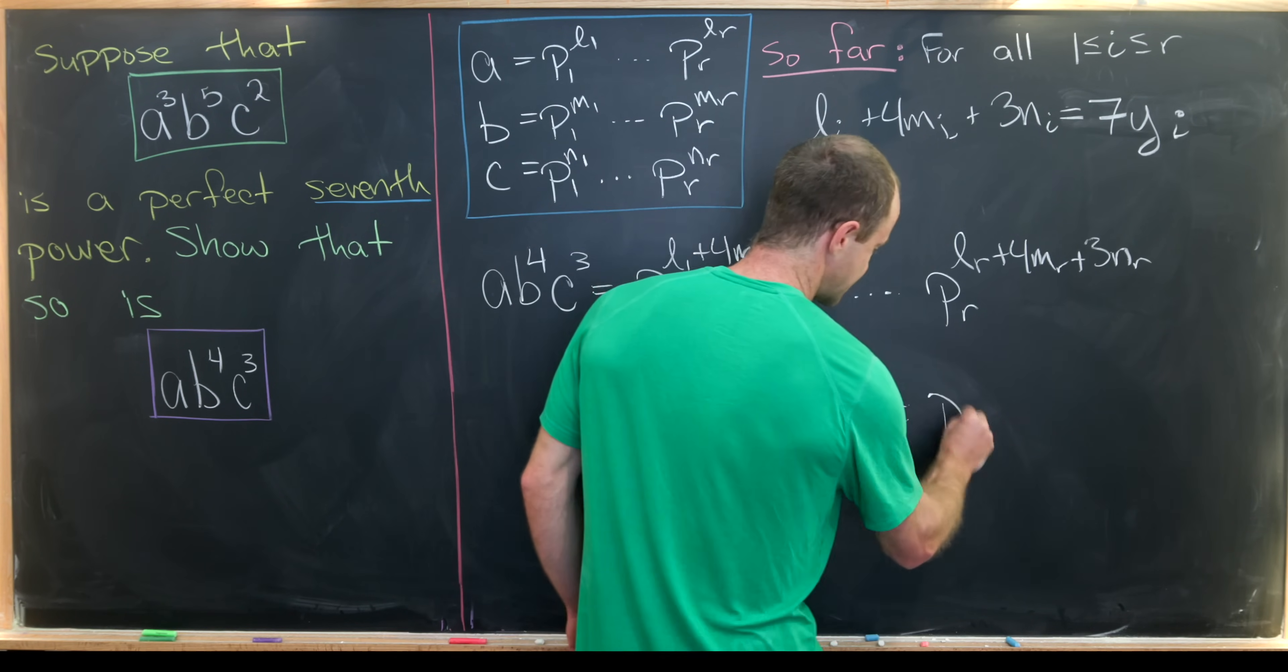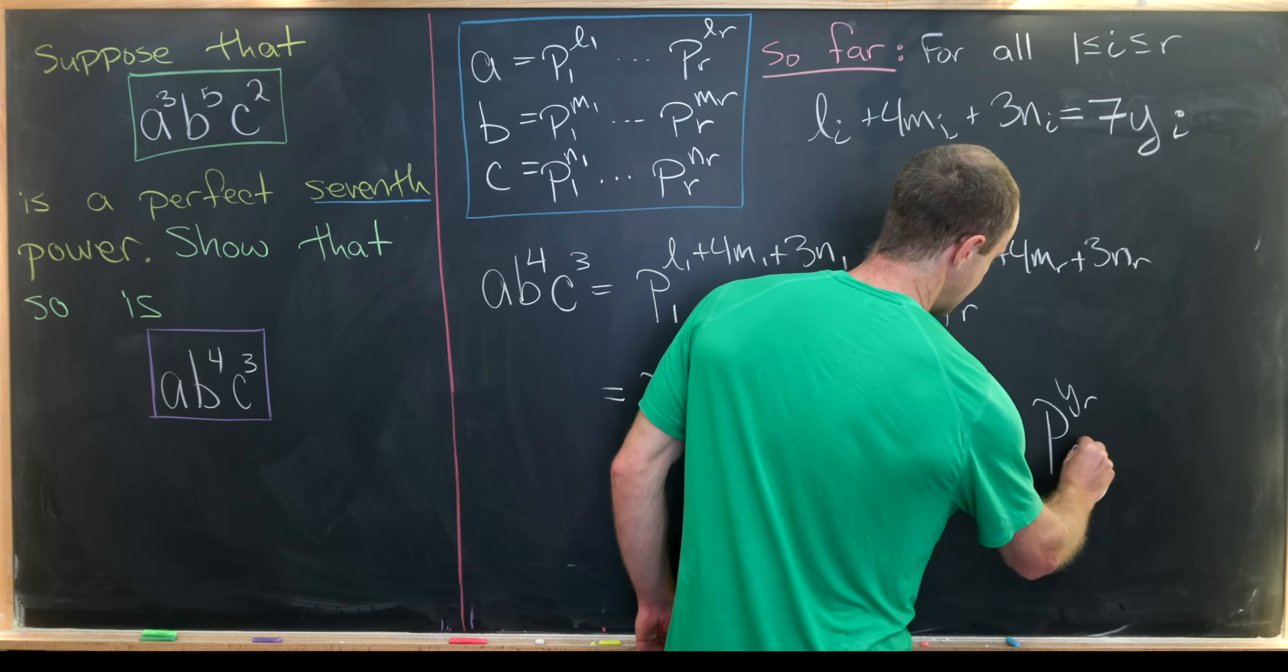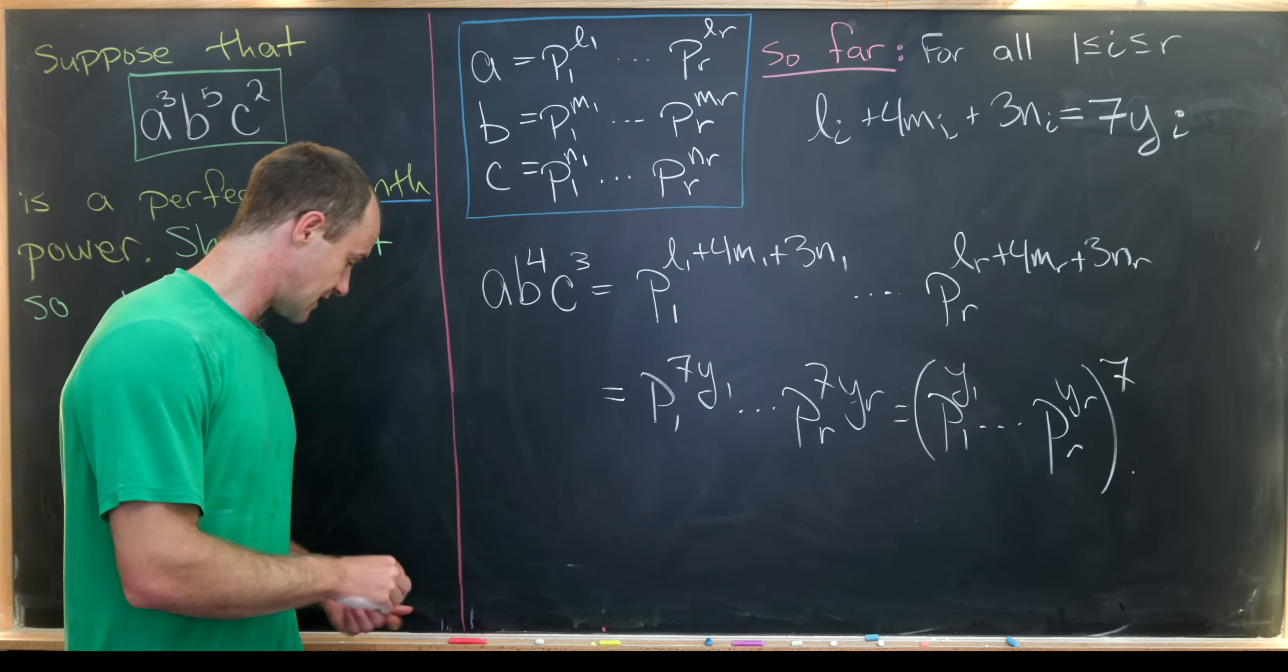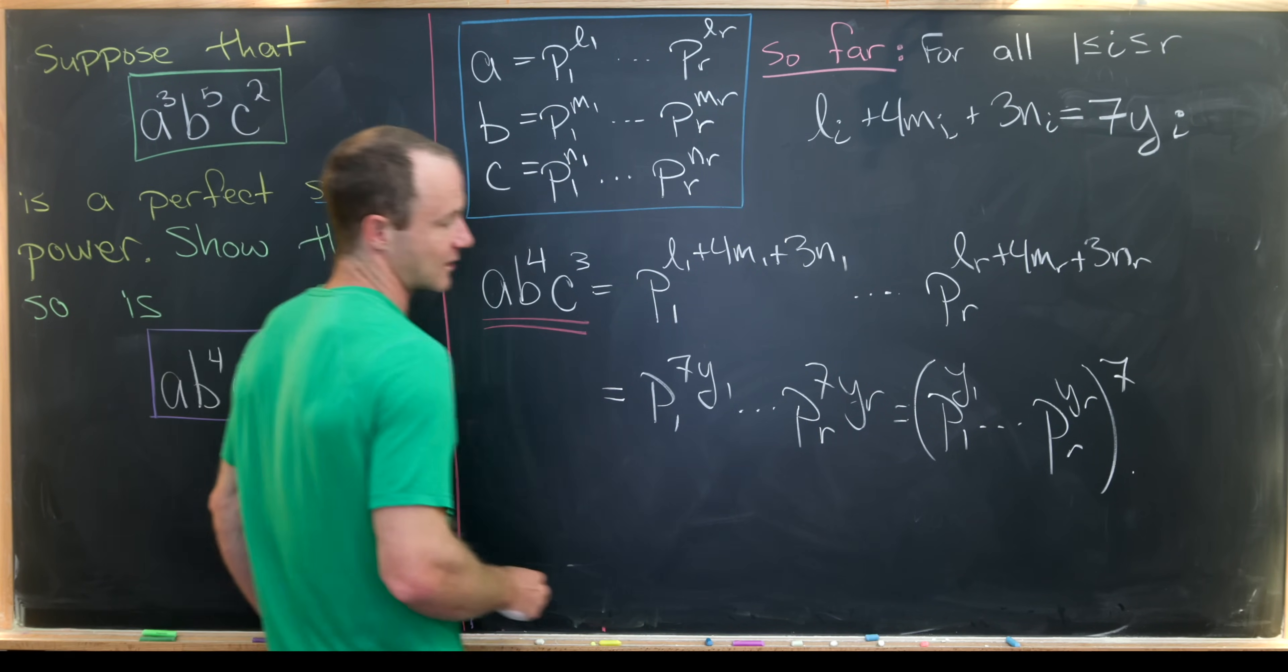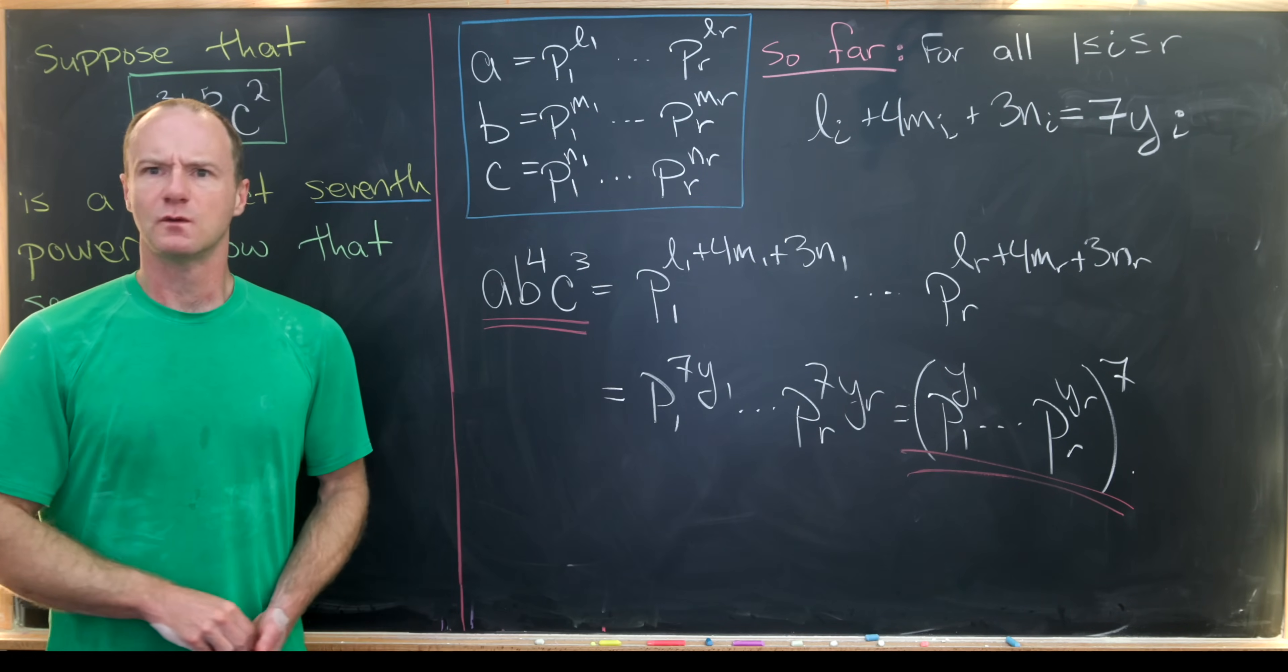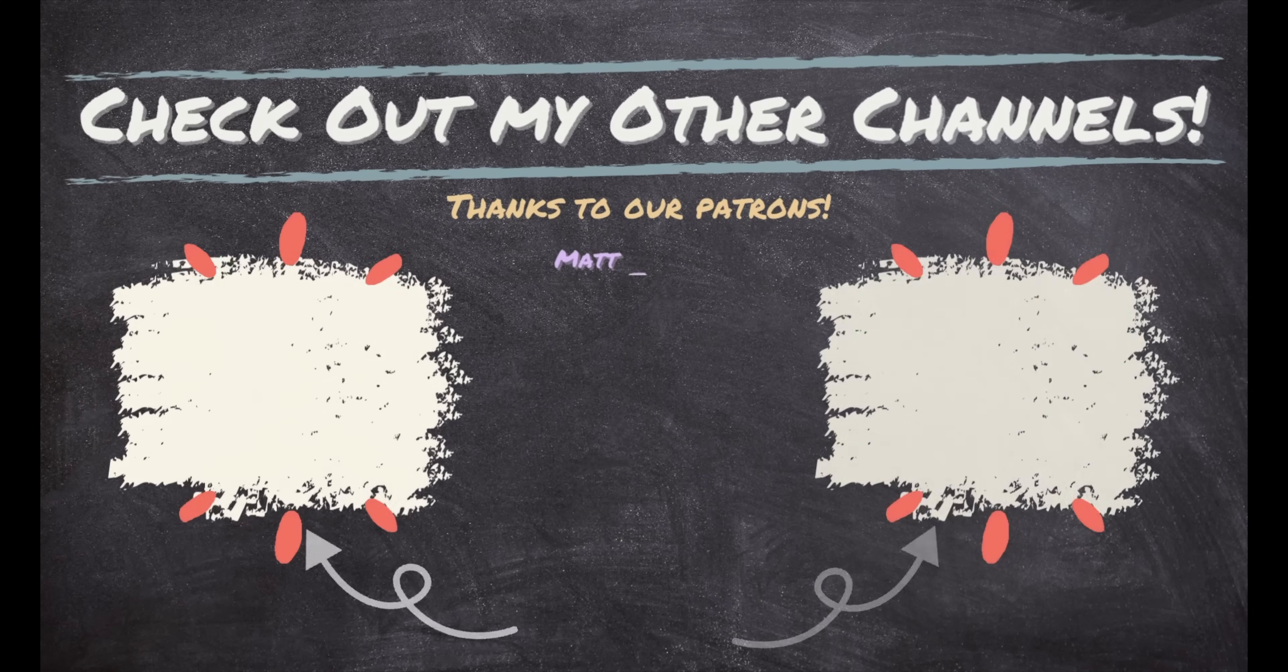So we have p1 to the 7y1, all the way up to pr to the 7yr. And then really to finish this off, we can write this as p1 to the y1 up to pr to the yr, all to the 7th power. So in the end, we've written our number a b to the 4th c cubed as a perfect 7th power, which was exactly our goal. And that's a good place to stop.